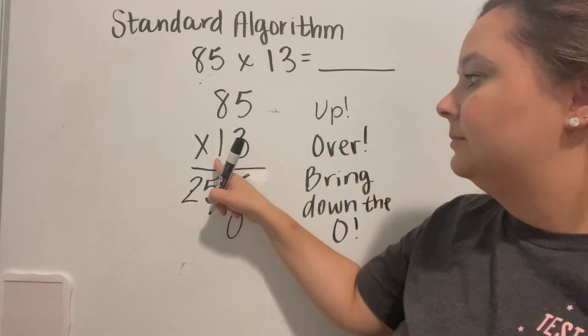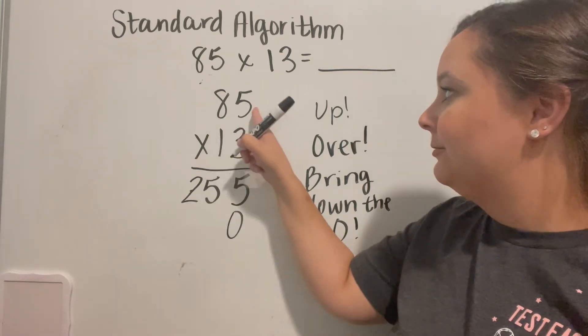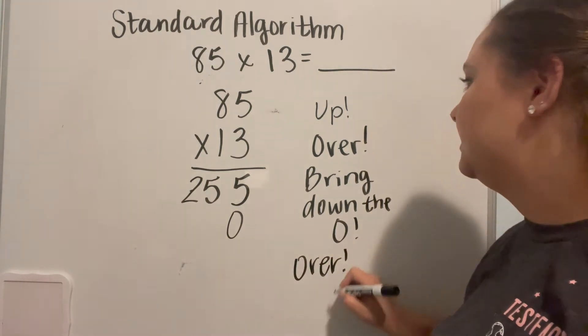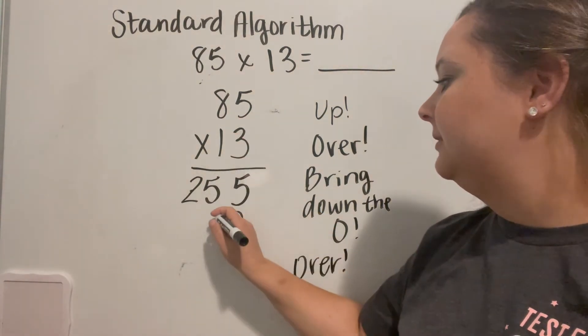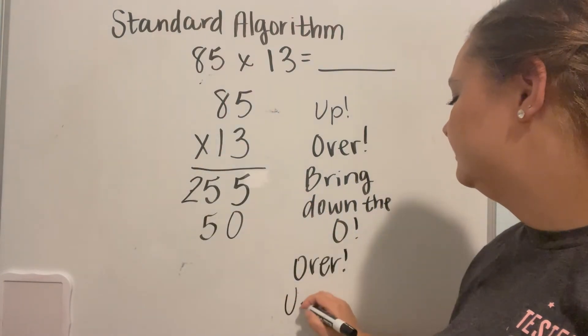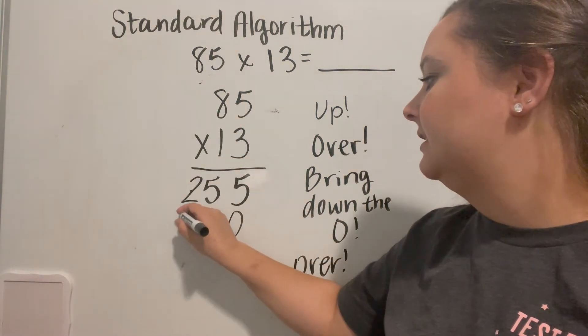Now we are going to be looking at our 1, which is in the tens place, and we are going to multiply over. So we do 1 times 5, which gives us 5, and then we multiply up, which will give us 1 times 8 is 8.